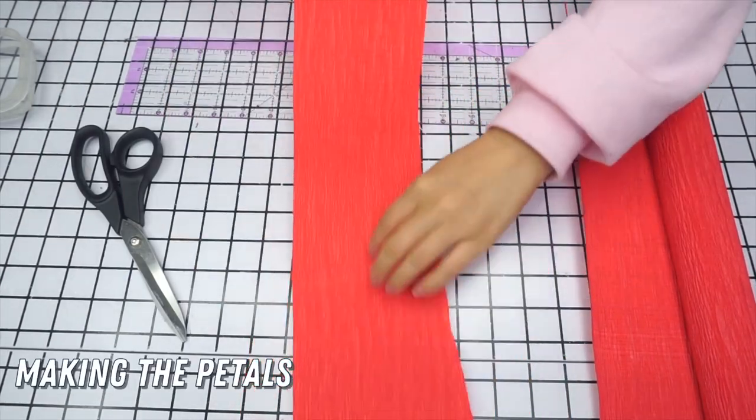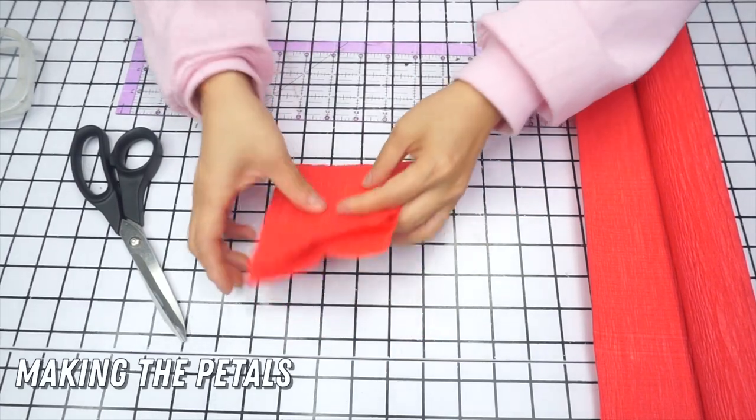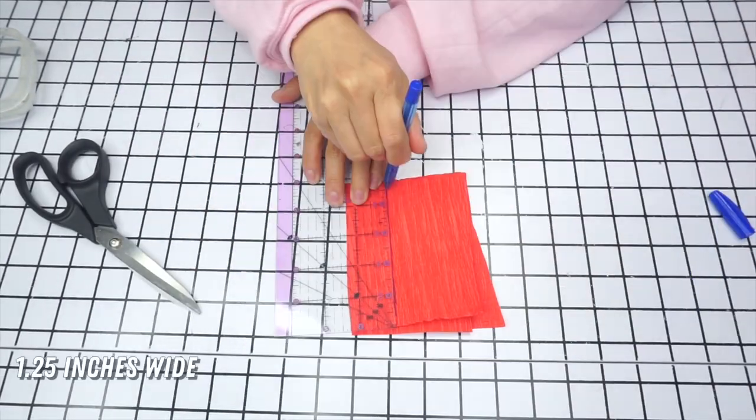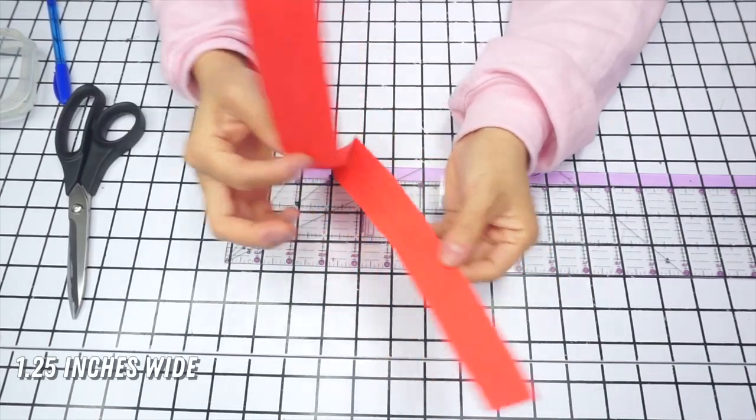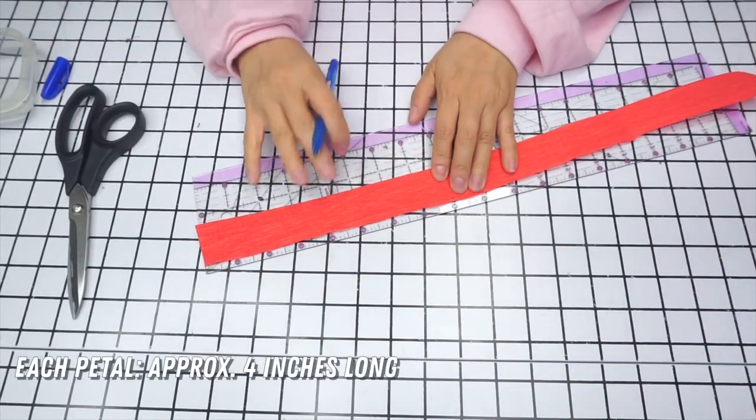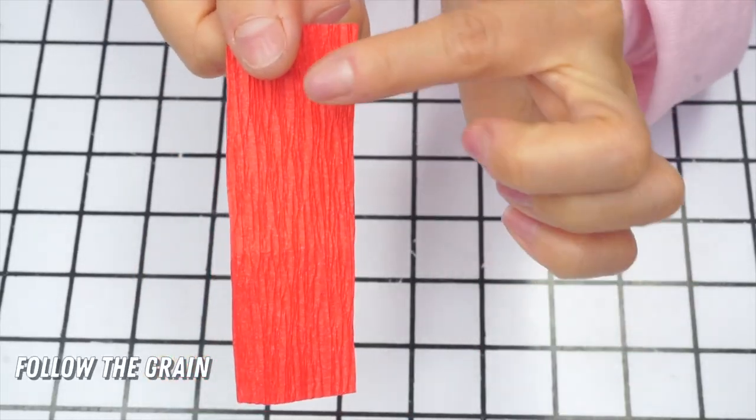Now let's make the flower petals. Cut a manageable section of crepe paper and fold it a couple of times. Mark and cut strips that are approximately one and a quarter inches wide. Then cut the paper strips into four inch long pieces. Remember to follow the grain of the paper.